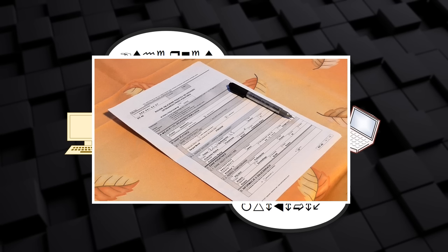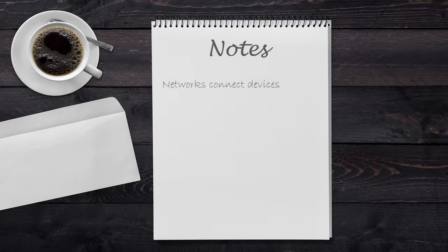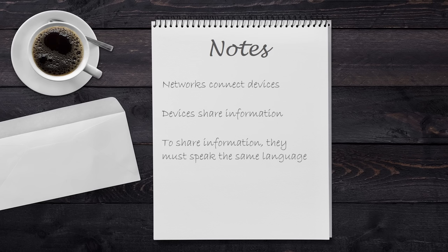Usually, several protocols are used together to achieve a task. We will look at protocols further in future videos. In summary, networks are used to connect devices together. Devices use the network to communicate and to share information. To share information, devices need to speak the same language — this language is called a protocol, which is a set of instructions for how to handle the information.